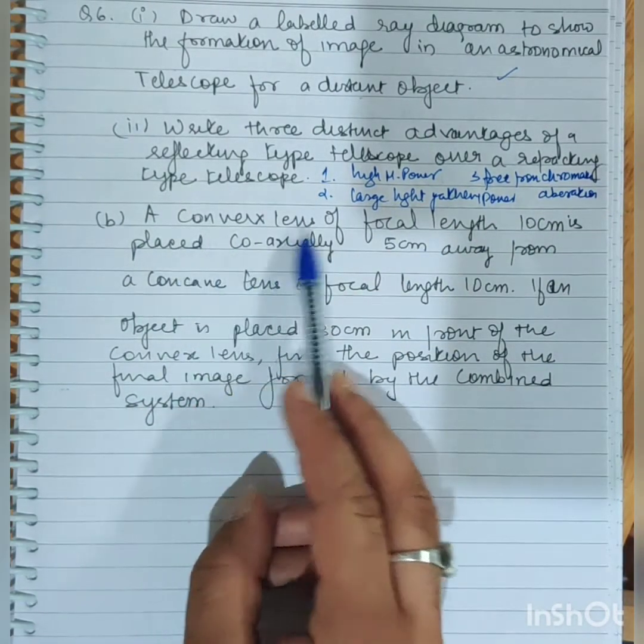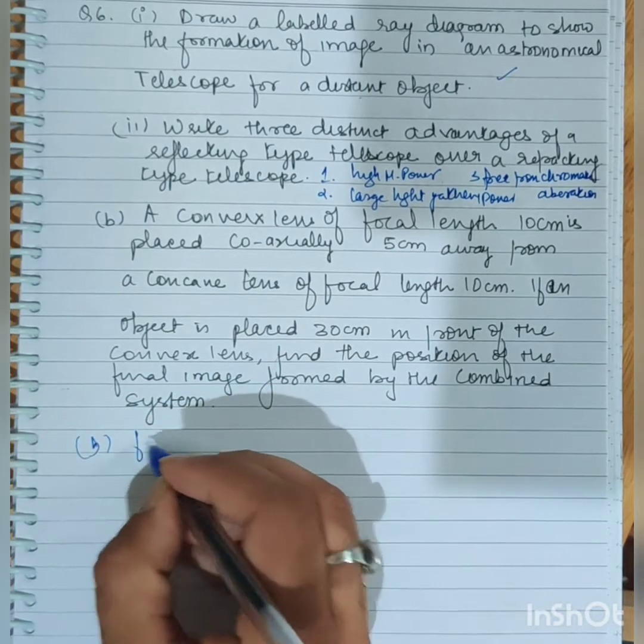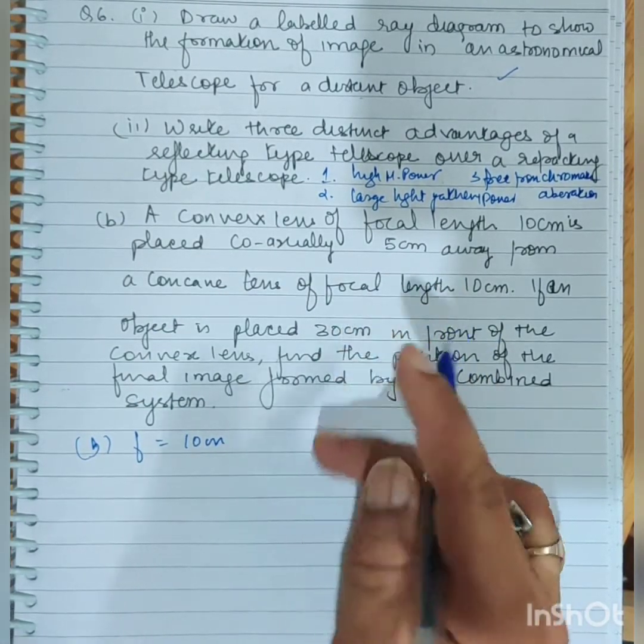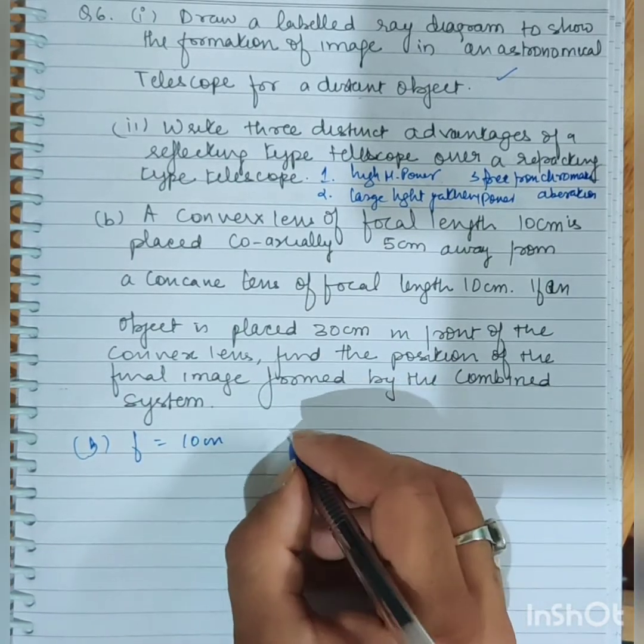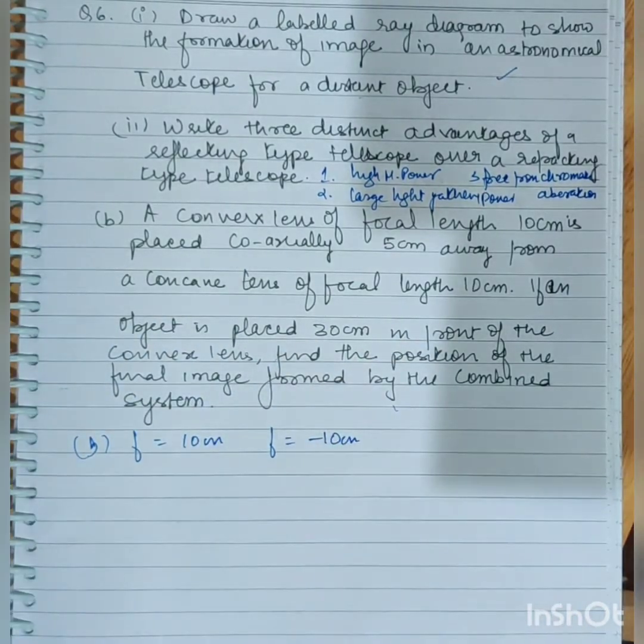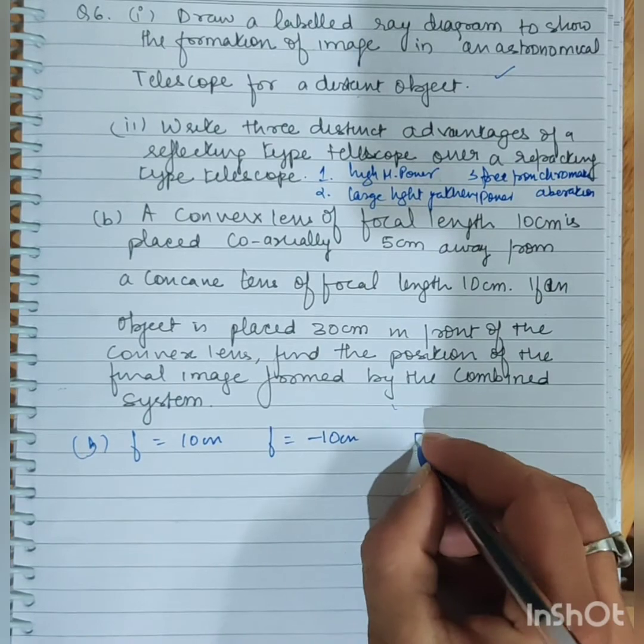Now we have a part: Convex lens of focal length 10 cm placed coaxially from a concave lens of focal length 10 cm. The focus of focal length is virtual, and the distance is 5 cm.